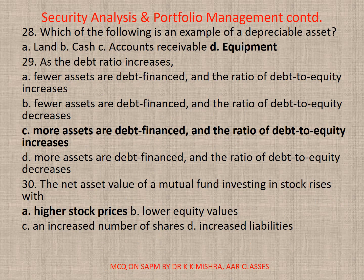Question 28: Which of the following is an example of a depreciable asset? Options: A. Land, B. Cash, C. Accounts receivable, D. Equipment. Correct option is D — equipment. Question 29: As the debt ratio increases — correct option is C — more assets are debt-financed and the ratio of debt to equity increases. Question 30: The net asset value of a mutual fund investing in stock rises with — correct option is A — higher stock prices.